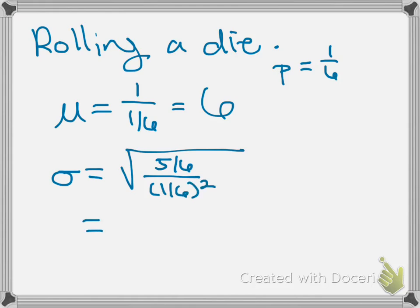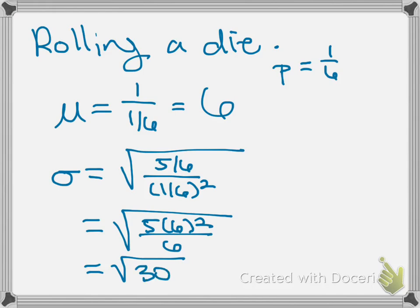If we simplify this down a little bit, this is going to be 5 times 6 squared over 6, which ends up being – the 6 is cancelled out, so this is the square root of 5 times 6, which is 30. And you can figure out what that is if you want to find the decimal value.